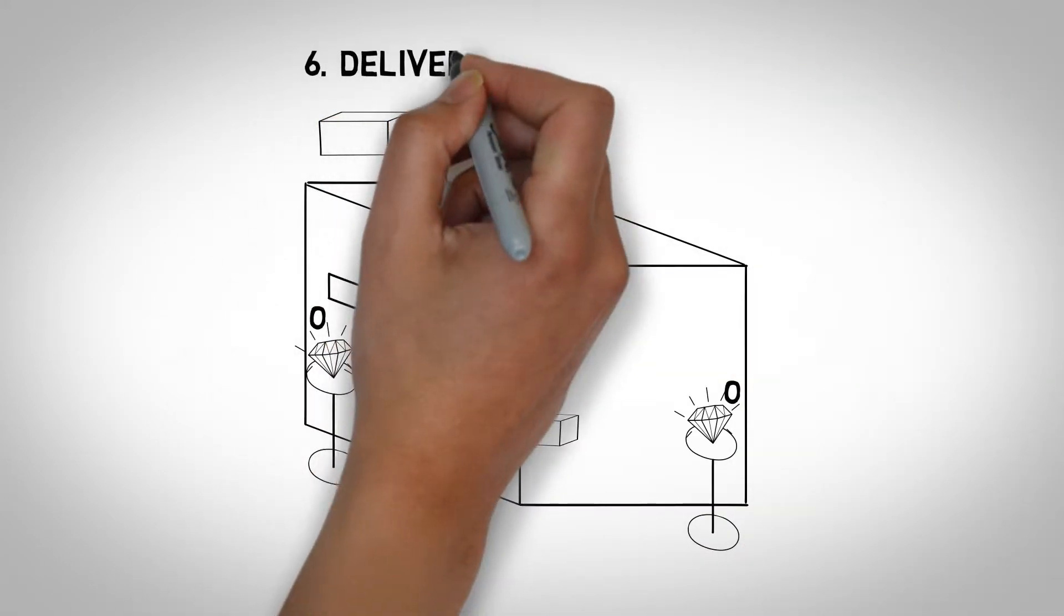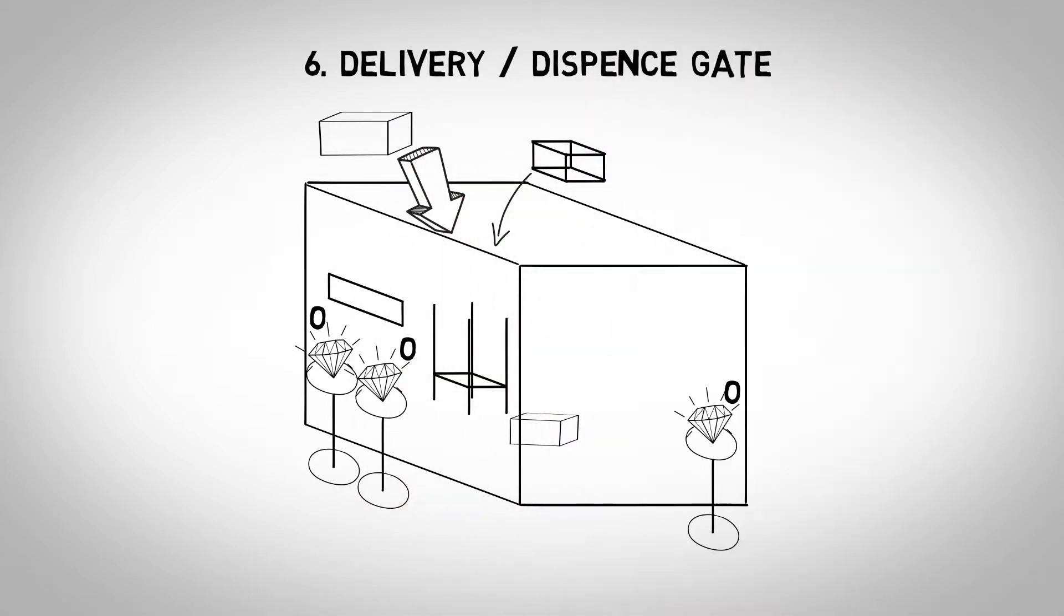6. Delivery dispense gate. We'll not just give you sales. We'll give you lots of information about the shoppers, even those who only looked at your products. You will have information about them that will help you improve sales.